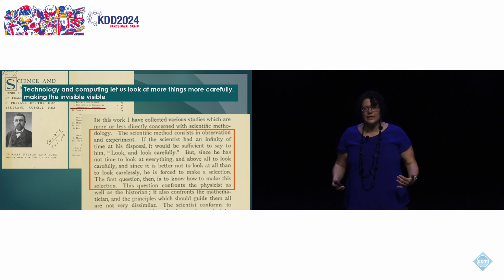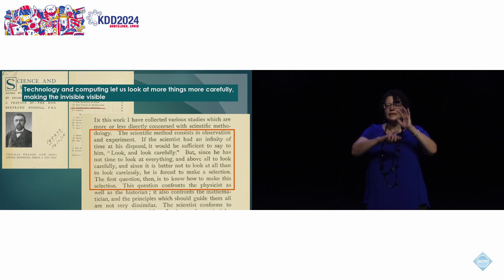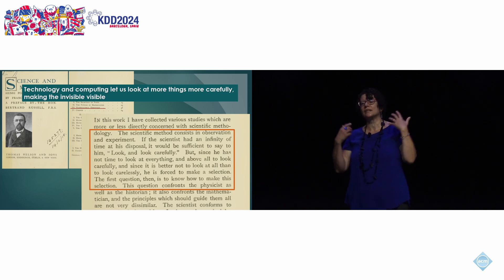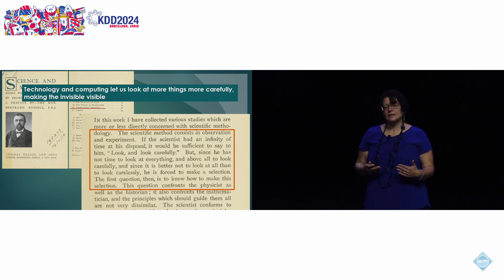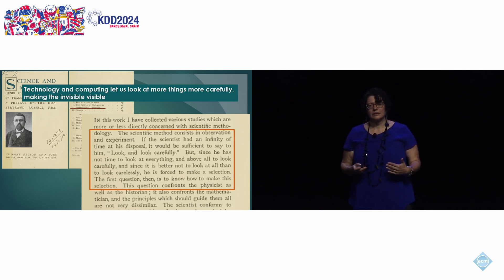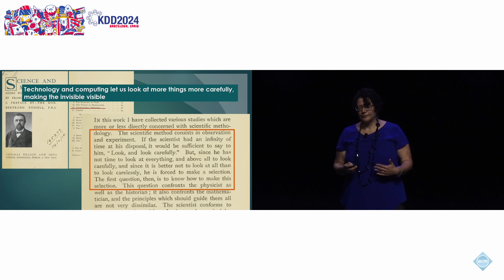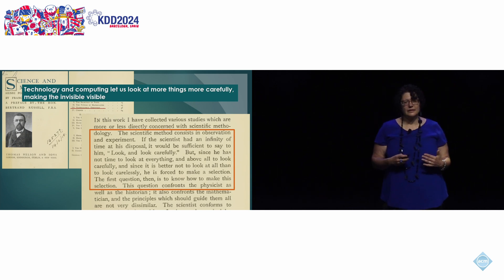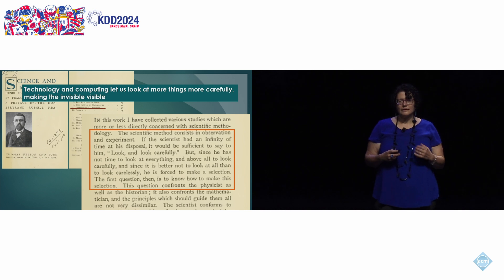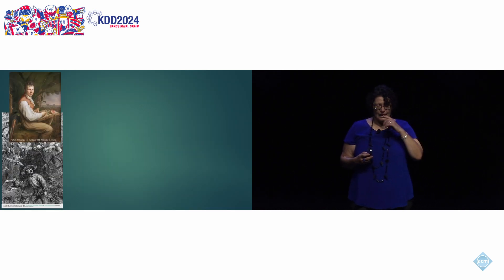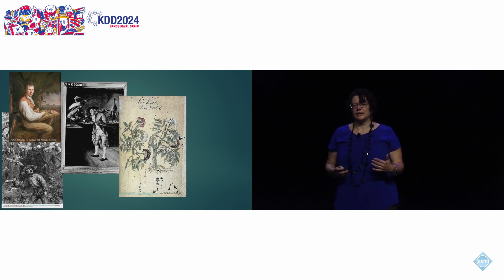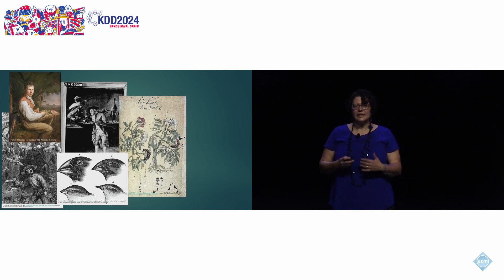That question of selection — that's where good science lies: what are the questions, what are you going to look at, and how are you going to look at it carefully? All that technology and computing does, including AI, is not changing the scientific method. All it does is lets us look at more things more carefully, making the invisible visible.